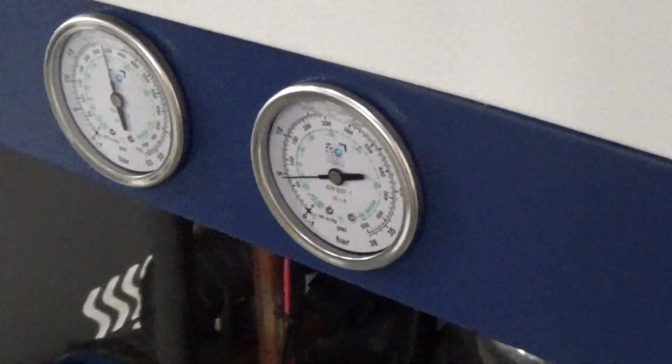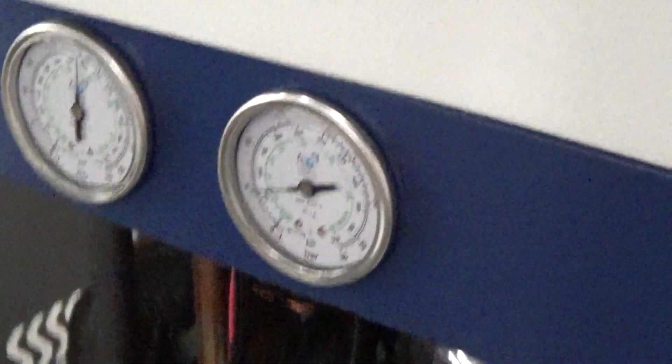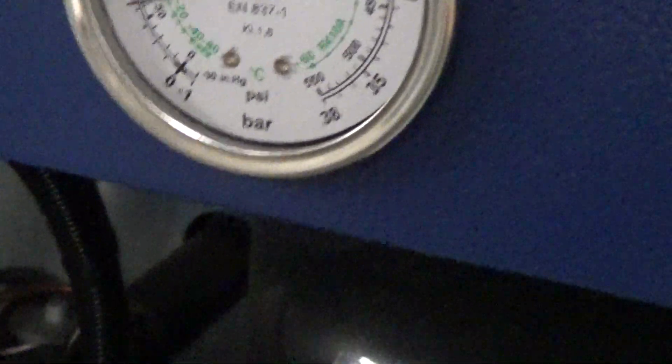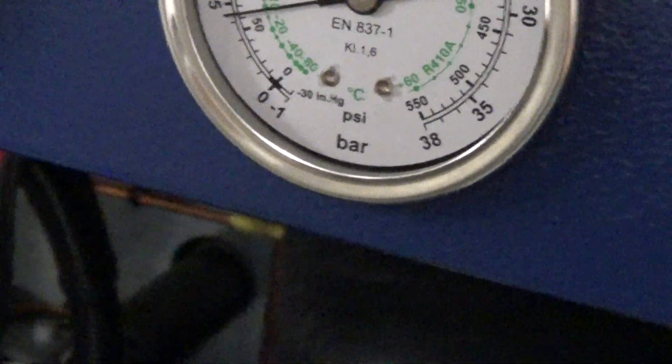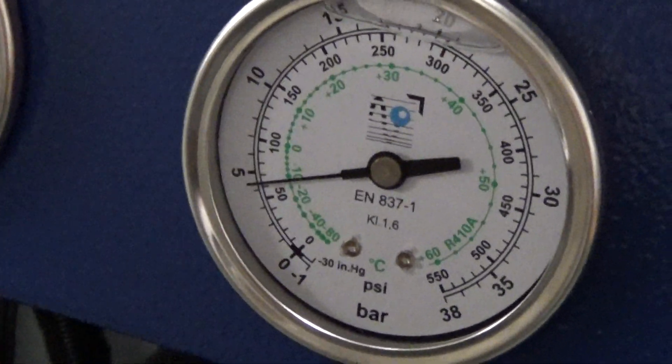Here's the type of pressure. The low pressure should be on the left. Is that right? Our high pressure gauge is on the left.